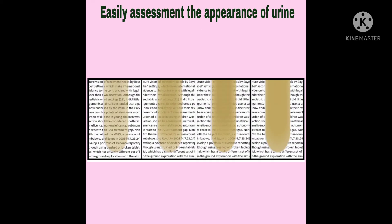If it looks as clear as the first picture, then the urine appearance will be clear. If it looks like the second picture, then the appearance will be slightly cloudy. If it looks like the third, then the appearance will be cloudy. And if it looks as cloudy as the last one, the appearance will be turbid.